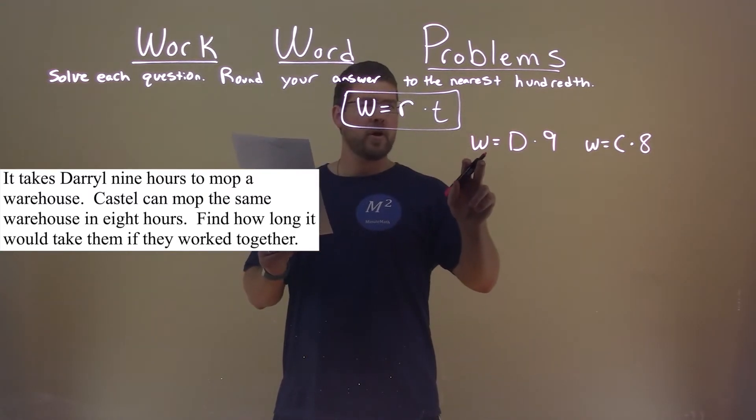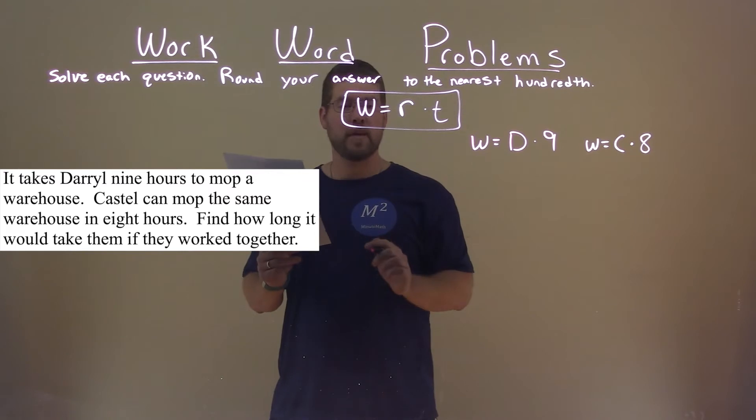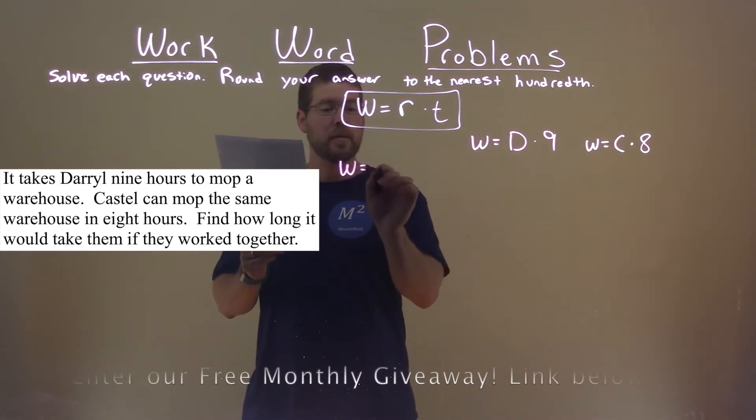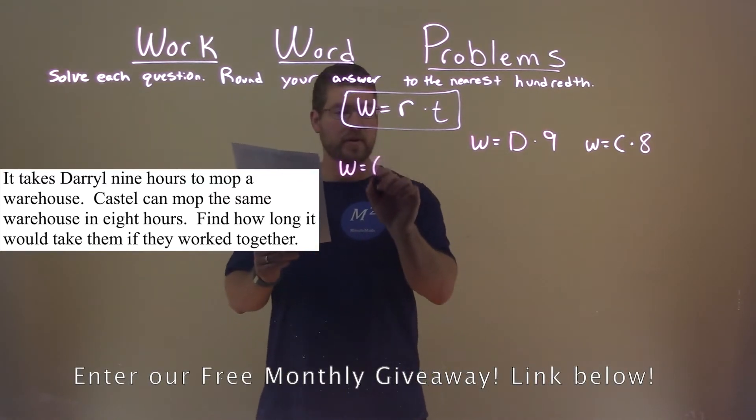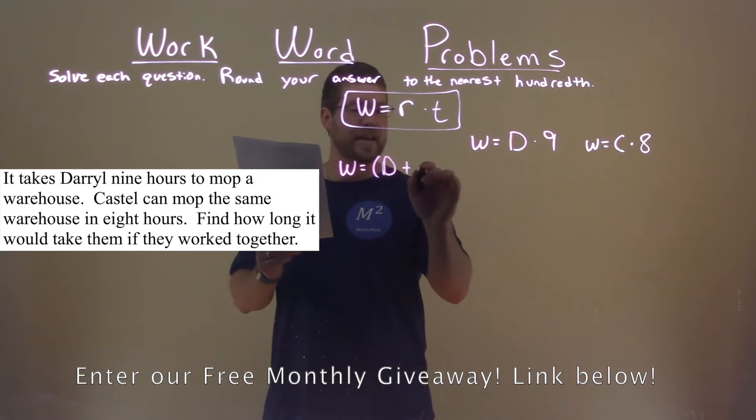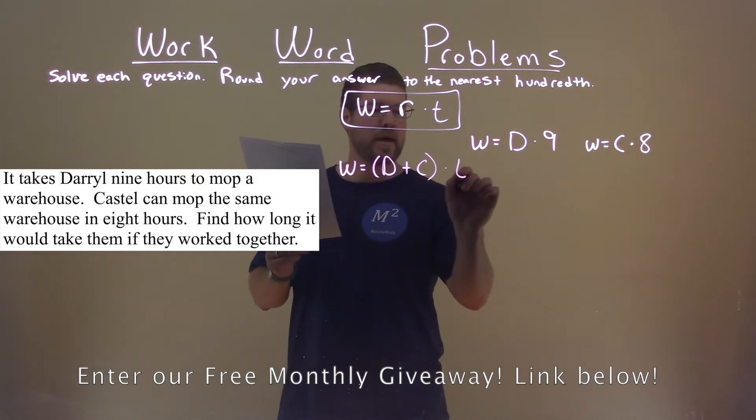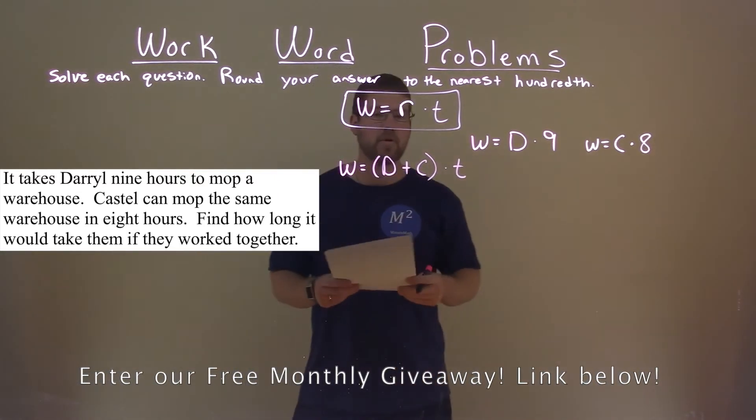So, what they're asking us here is how long if they worked together. So, the same job of mopping the warehouse, we take Daryl's rate plus Castle's rate, and then we multiply that by time. And we want to find what that time is.